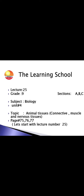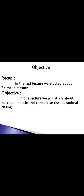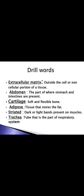Bismillah. Assalamu Alaikum. This is lecture number 25 for Grade 9 sections A, B, and C. Subject is Biology, Unit number 4. Topic is animal tissue: connective, muscle, and nervous tissues, pages 75, 76, and 77. In the last lecture we studied epithelial tissues and its different kinds. In this lecture we will study nervous, muscle, and connective tissues — all animal tissues.